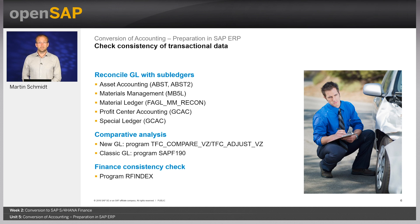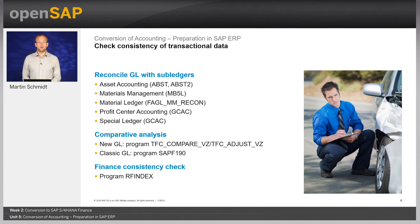Here you can see the consistency checks for transactional data that you can run in the source SAP ERP system before installing SAP S4HANA. These include programs for reconciling the general ledger with sub-ledgers and components such as asset accounting, material management, and special ledger. Most of these programs are well known and commonly executed as part of the closing process. For asset accounting, we have two dedicated programs: transaction ABCT2 and ABCT. You execute ABCT2 first, which compares asset GL account balances with asset summary records in table ANLC, identifying all GL accounts with a discrepancy between GL balance and asset values.